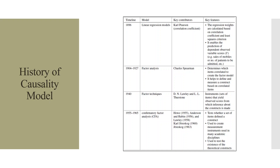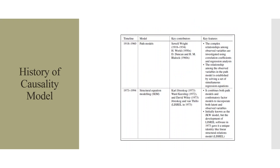The causality model dates back to 1896, the year in which the linear regression model was developed by Carl Pearson. In 1904 to 1927, factor analysis was developed by Charles Spearman. In 1940, D.N. Lawley and Thurston came with the factor techniques. During 1955 to 1965, confirmatory factor analysis was developed by Harvey, Henderson, and Rubin. During 1918 to 1960, path models were developed by Sewell Wright. From 1973 to 1994, the structural equation modeling technique was developed by Kajowska, combining both path models and confirmatory factor models to incorporate both latent and observed variables.